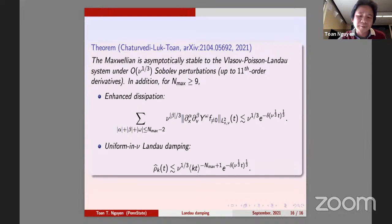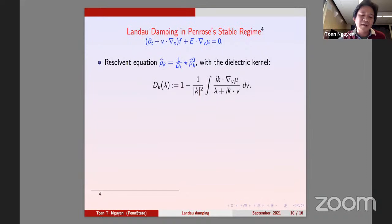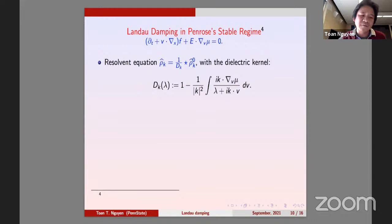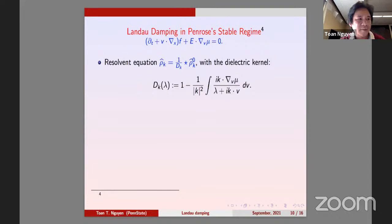In the whole space there are three regimes: large k is trivial, k in between is Mouhot-Villani on the torus, but in the whole space you also have small k near zero where everything is driven by the electric field. Peter asks: if you add constant damping by hand — like in Klein-Gordon — would that help? The speaker says: if you can remove the zero frequencies, then you can do Landau damping.